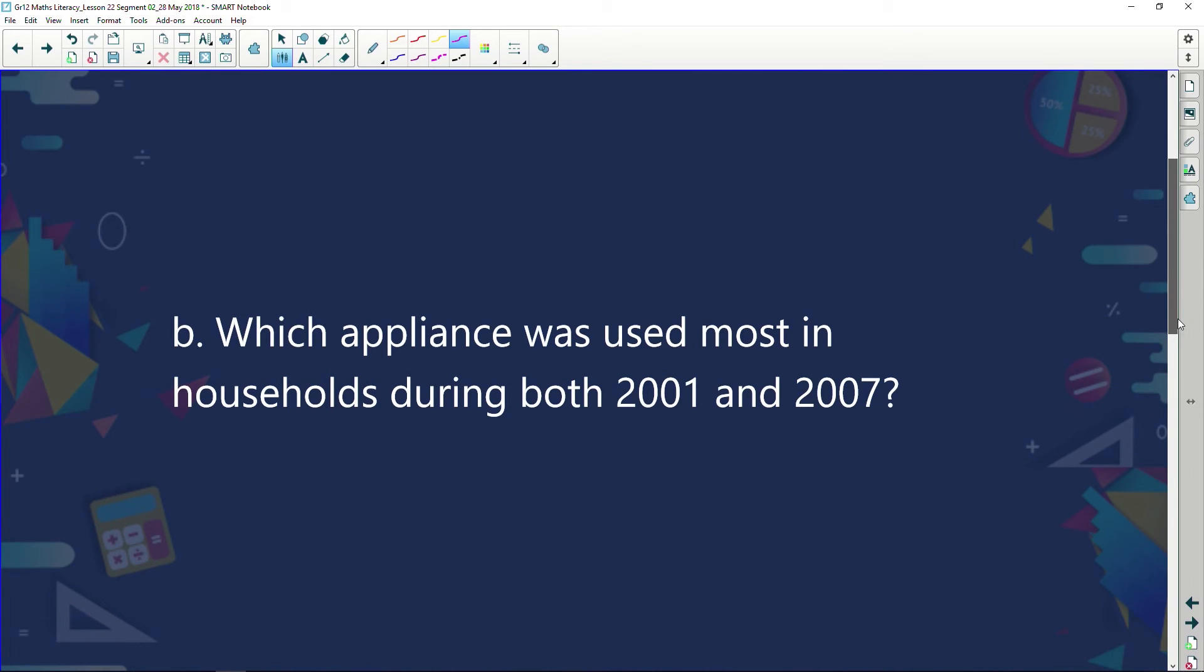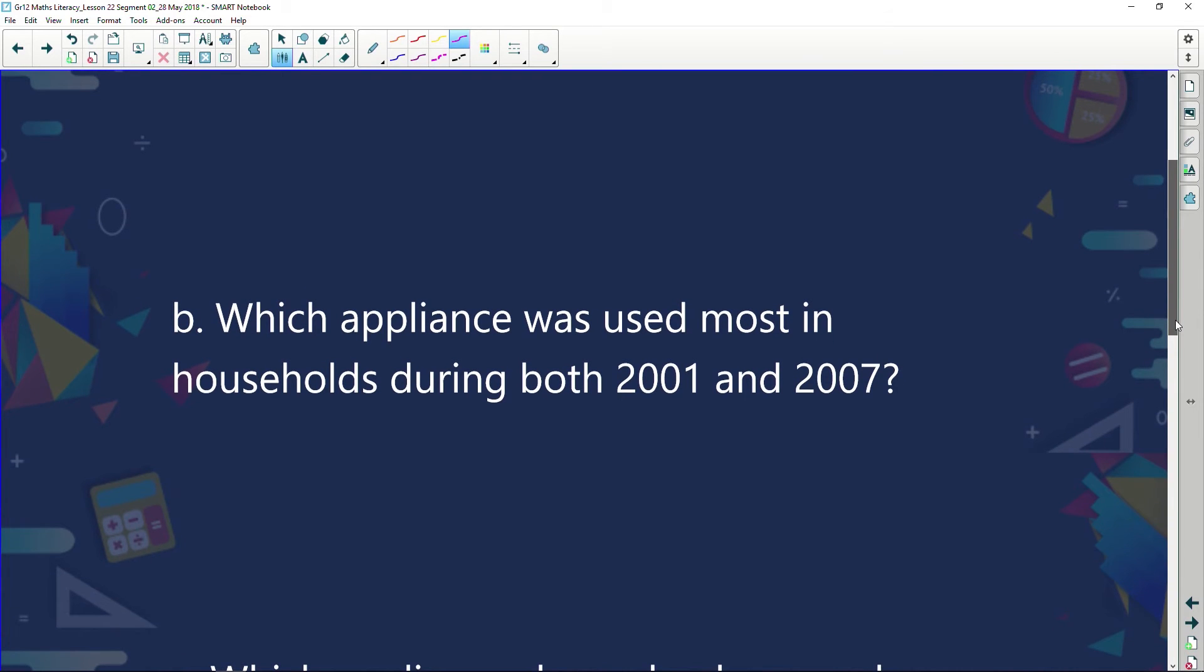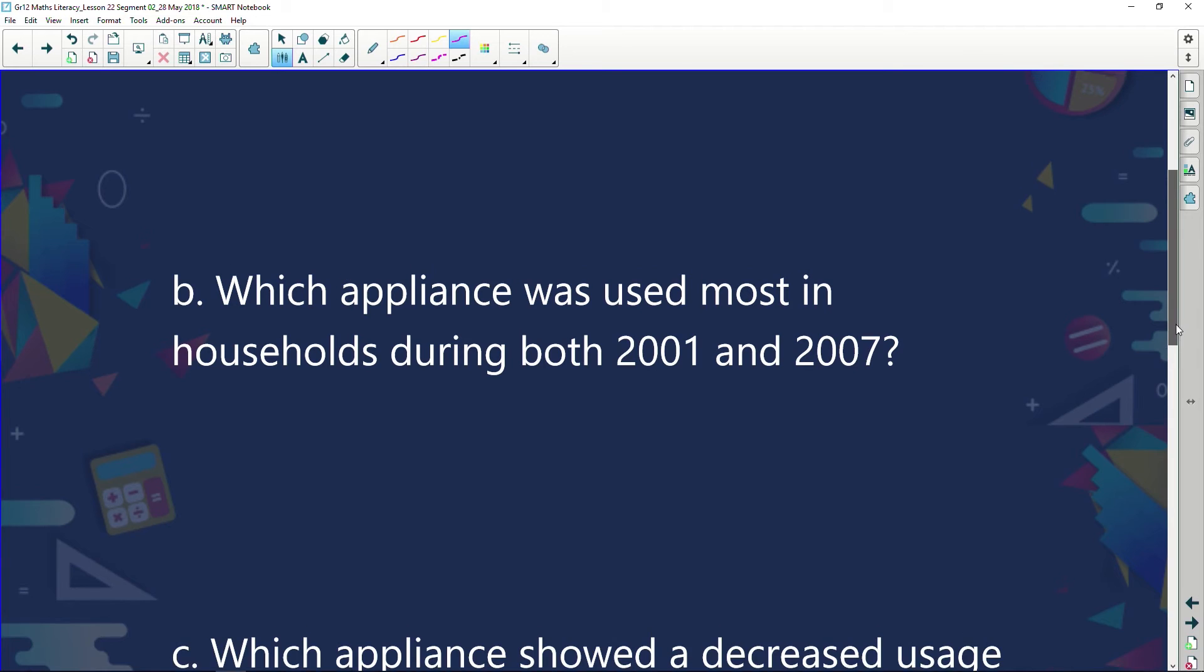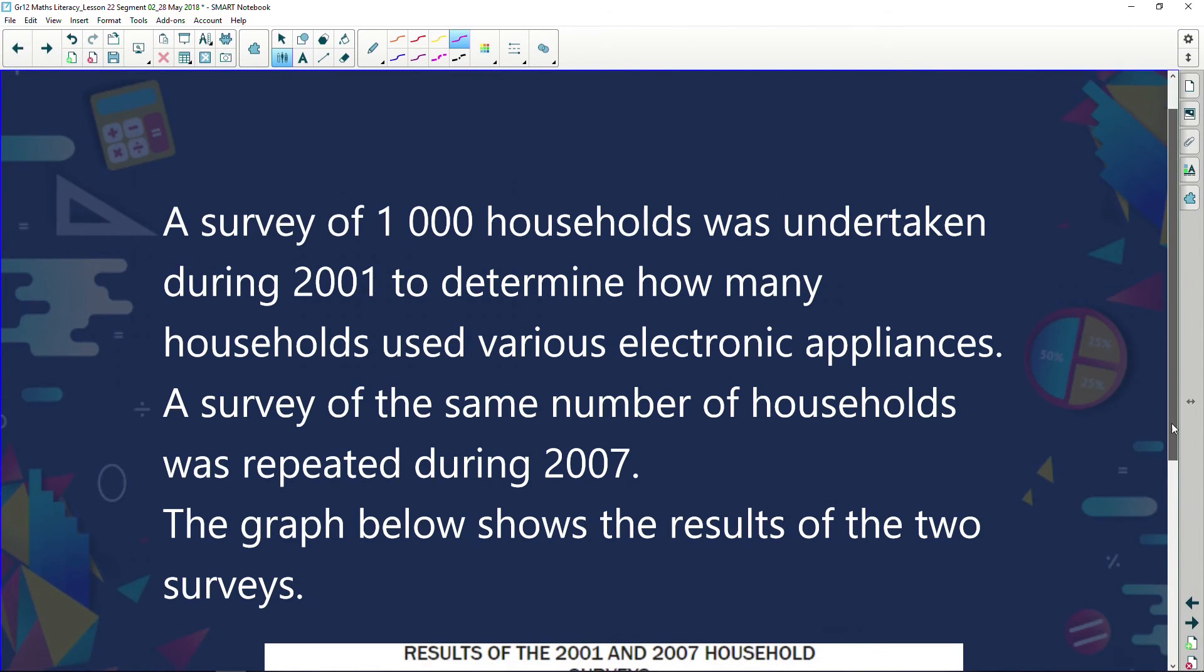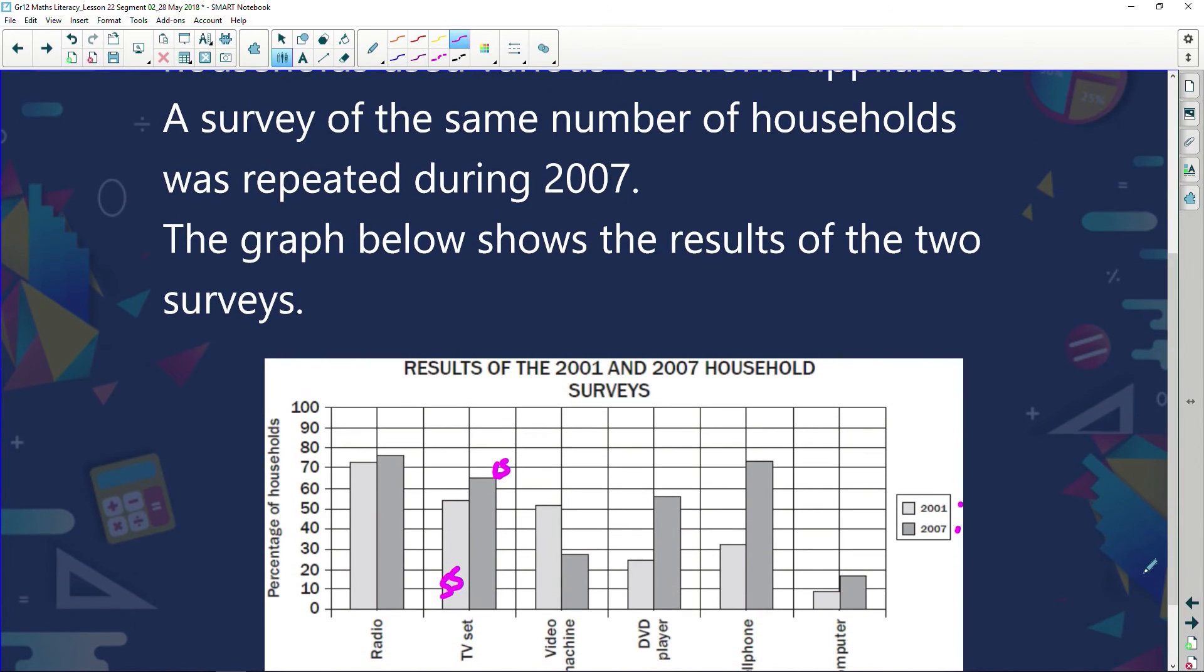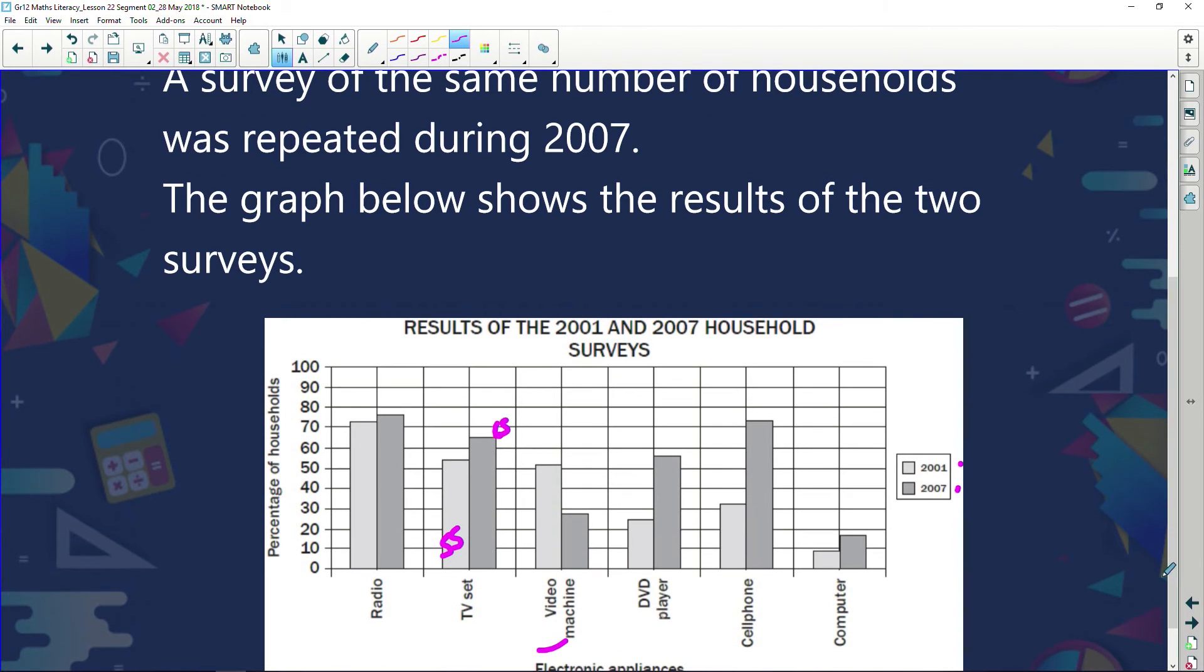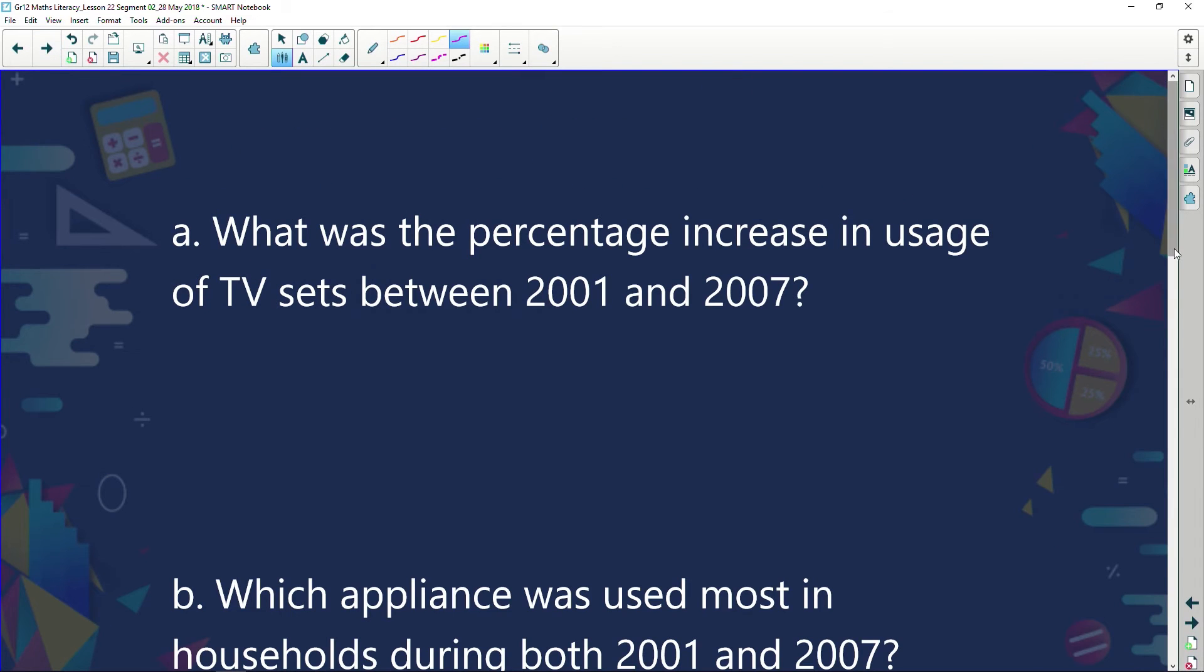Next one. We go on and we see which appliance was used most in the households during both 2001 and 2007. So which appliance was used the most in 2001 and 2007? Folks looking at this, it was the radio. There it is. Radio was used the most in both sets of households in 2001 and 2007.